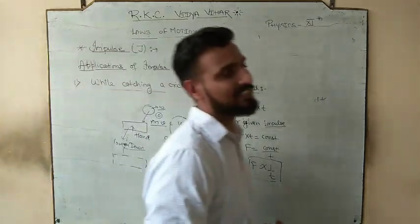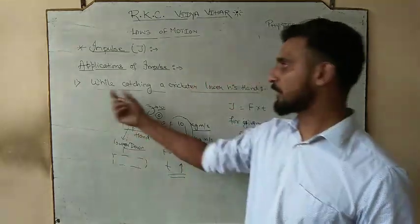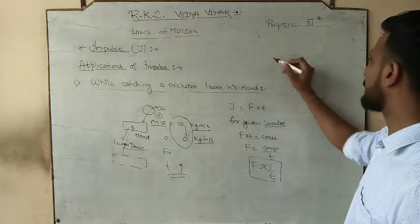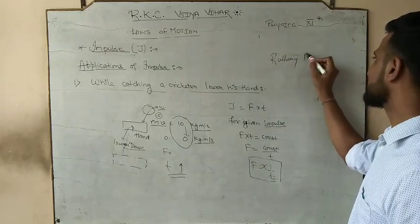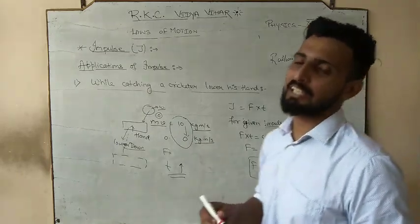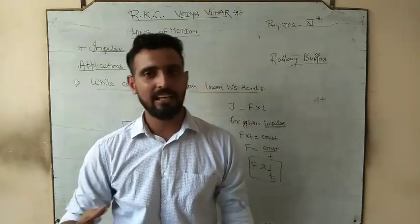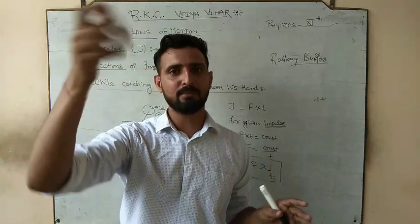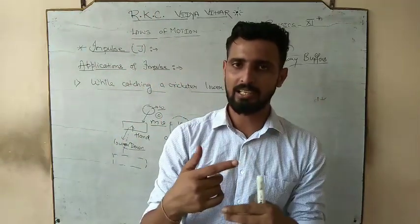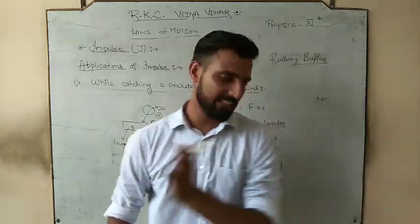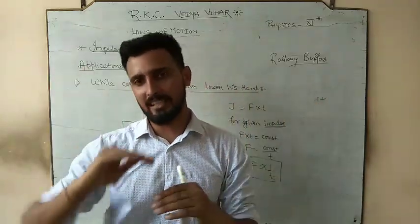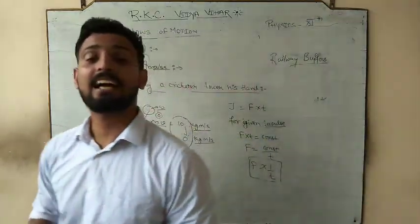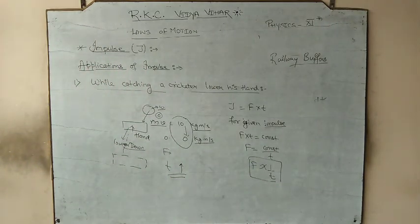So these are some applications of impulse: catching a ball, jumping on mud versus concrete, vehicle shockers, and railway buffers. Railway buffers are the rubber/spring connectors between compartments. You can see them from outside the train — the black rubber-like structure between compartments. They work exactly the same way as shockers, absorbing impact over time to reduce force.